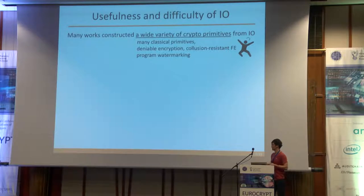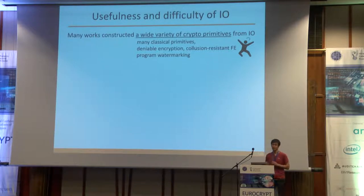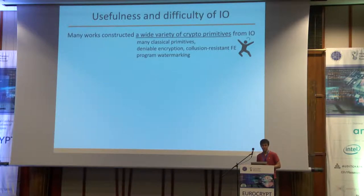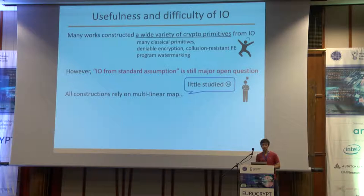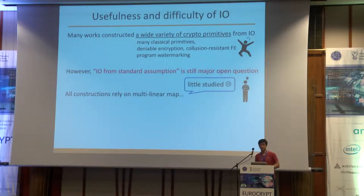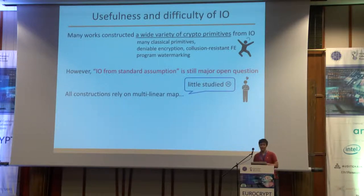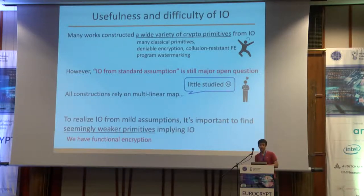Although I.O. is weaker than VBB obfuscation, many works have shown that I.O. is powerful enough in the sense that we can construct a wide variety of primitives based on I.O. However, constructing I.O. from standard assumptions is still a major open question. All existing constructions of I.O. are based on multilinear maps, which are not standard assumptions in the sense that they have been little studied so far.